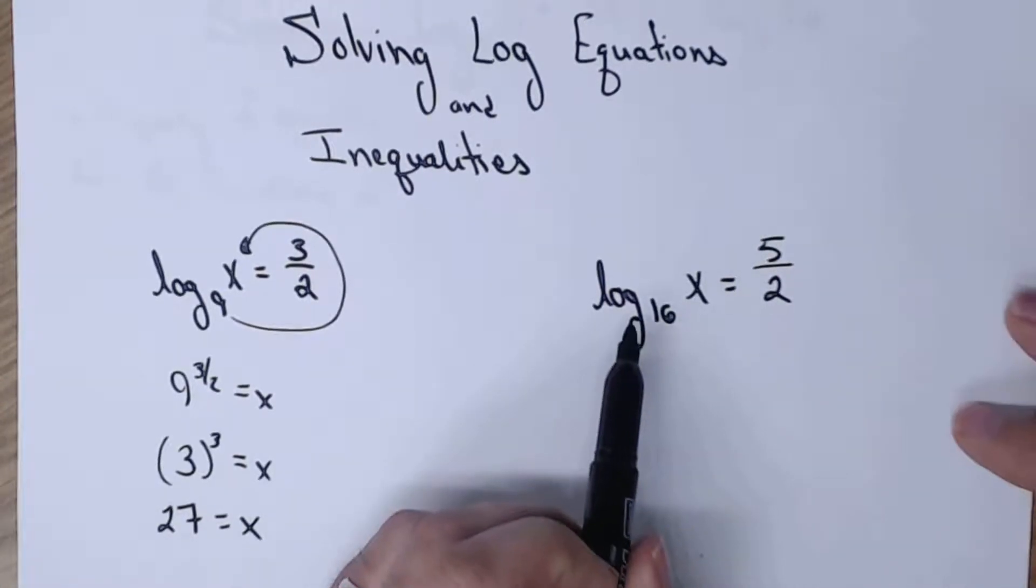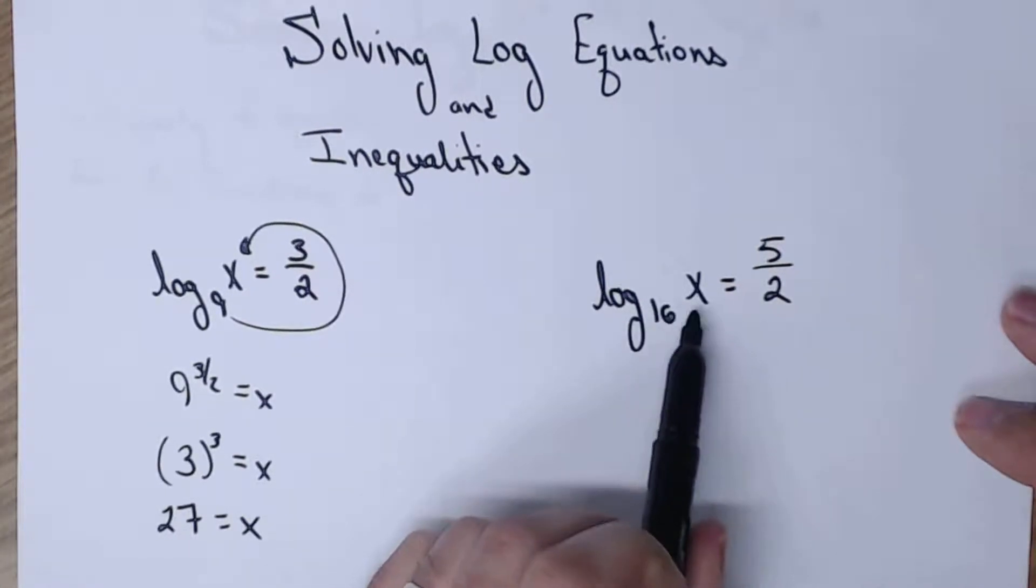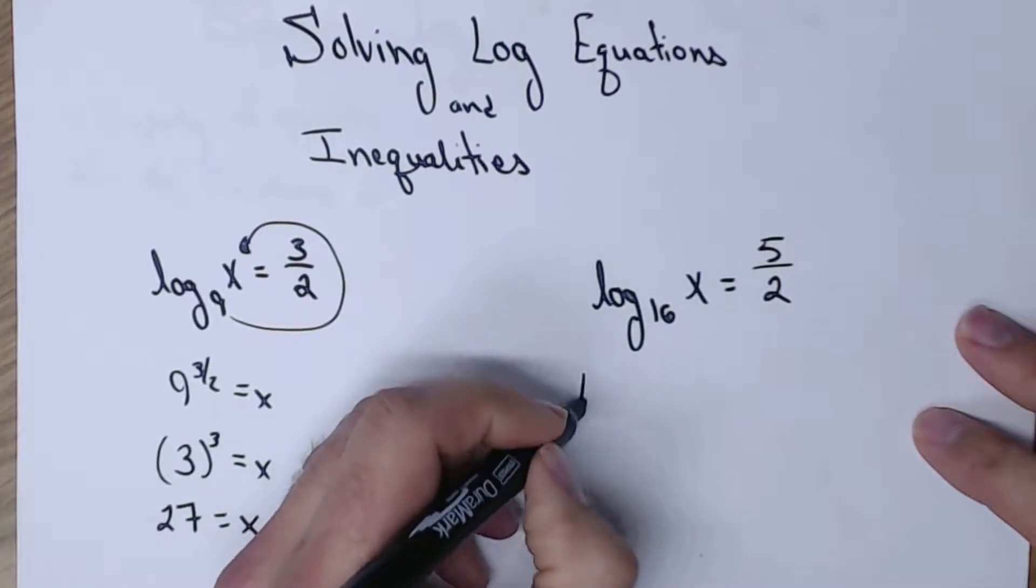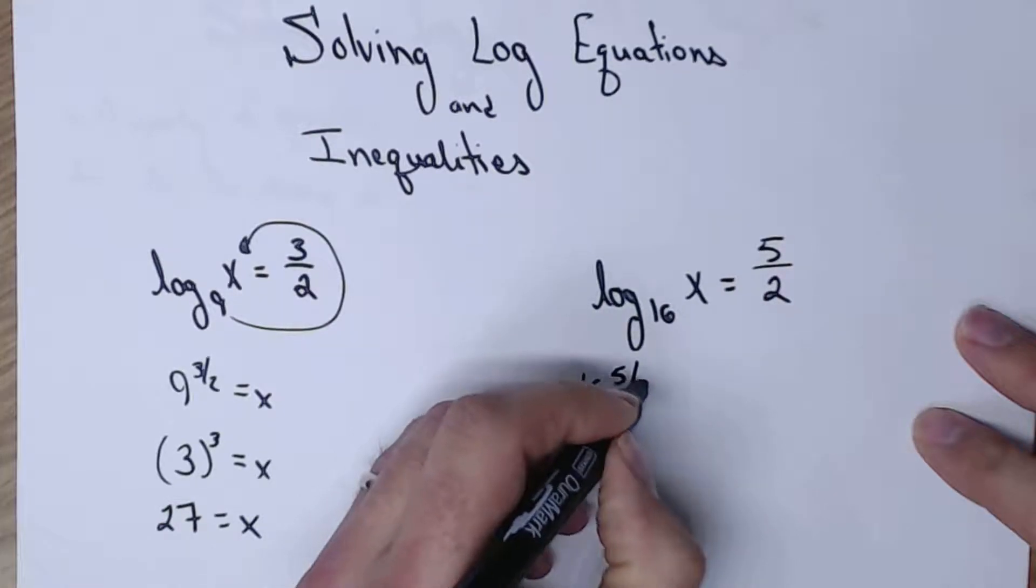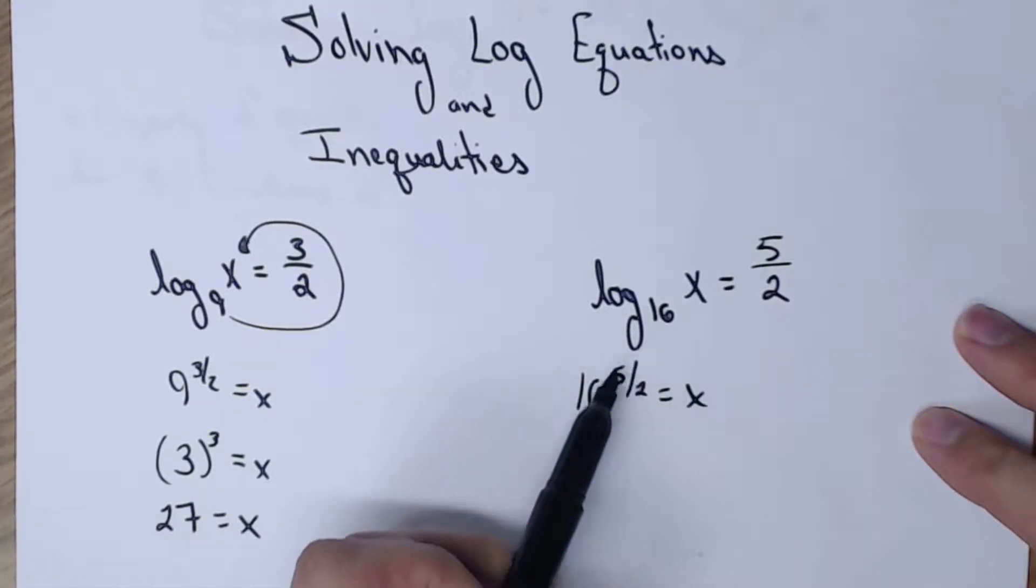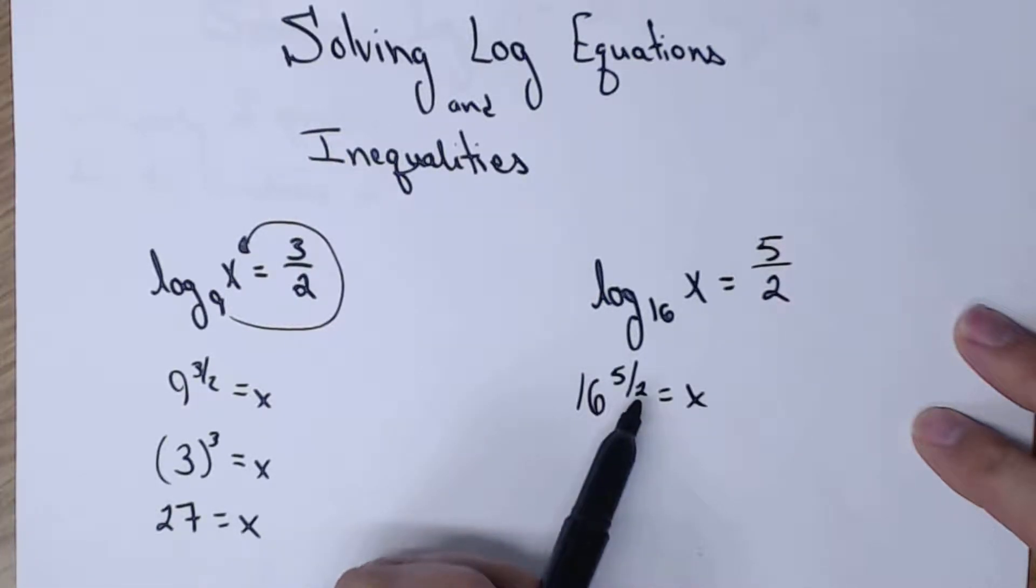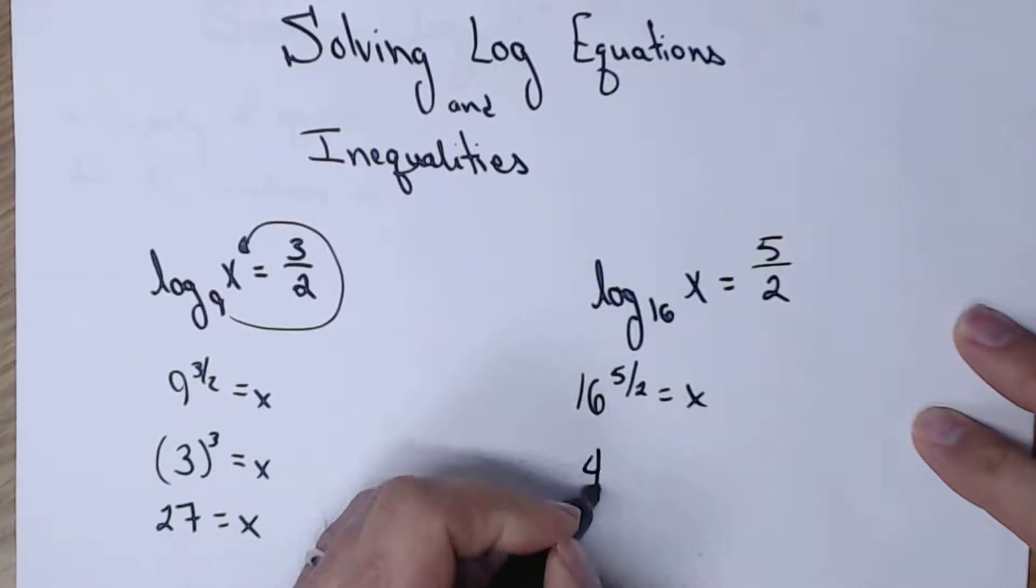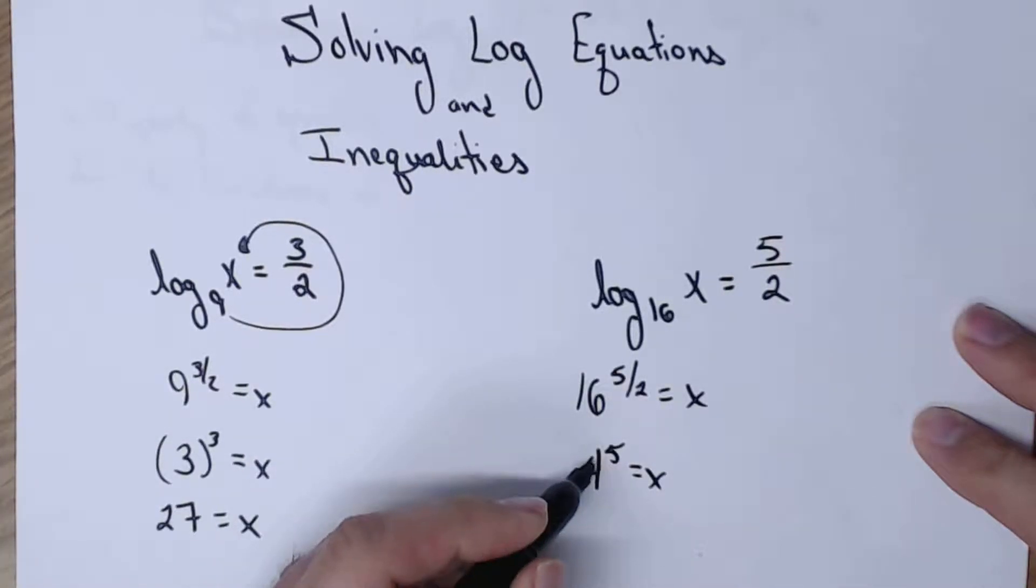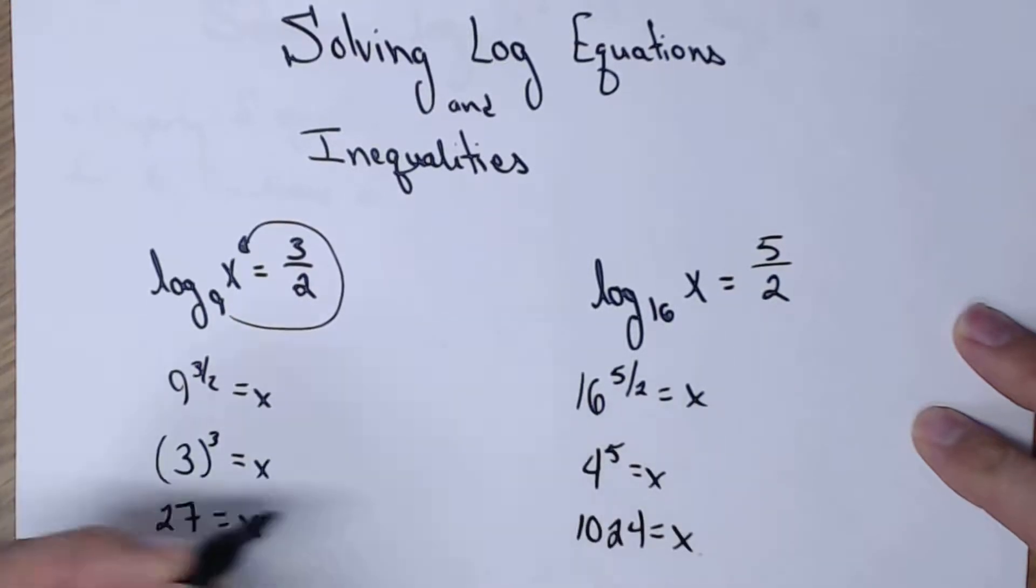Next we're going to scooch over here. Log base 16 of x equals 5 halves. Again I'm going to go into exponential form. So 16 to the 5 halves equals x. Again power over root, I don't want to take 16 to the 5th power. So instead I'm going to do the square root first. What's the square root of 16? 4. So I now have 4 to the 5th equals x. And 4 to the 5th is 1024. Big number.